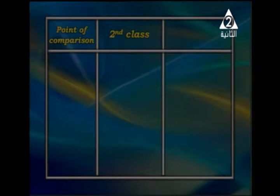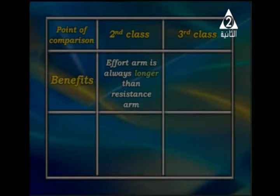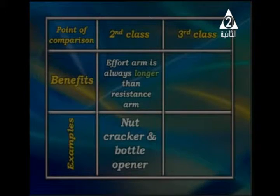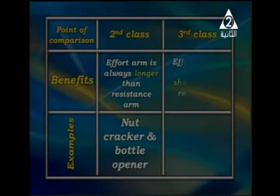Another point: in the second class lever, the effort arm is always longer than the resistance arm — that is the reason it saves effort and time. Examples of second class levers include nutcracker, bottle opener, wheelbarrow, and some types of staplers.